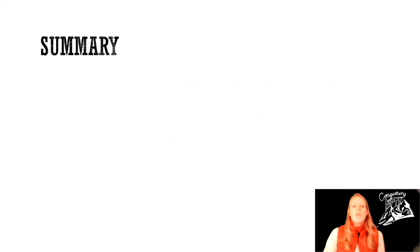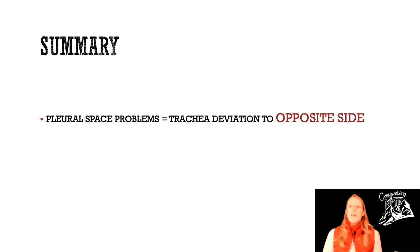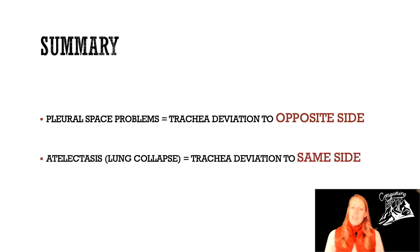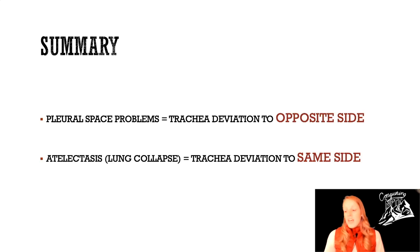Here's our summary: if you have a pleural problem — pneumothorax, hemothorax, or pleural effusion — the trachea deviates to the opposite side. If you have atelectasis, sometimes referred to as lung collapse in questions, the trachea deviates to the same side. It's a very specific topic, but if you can get one more question right, that's a win.